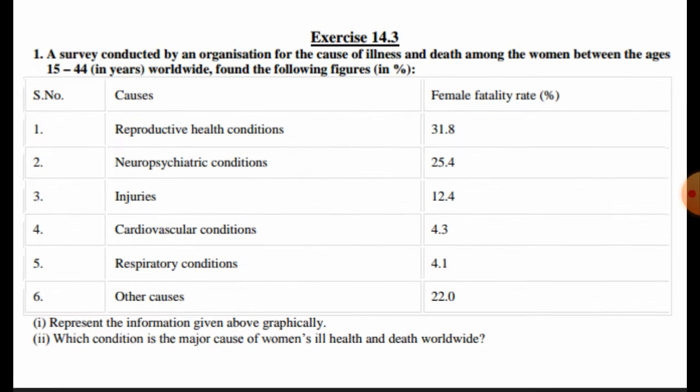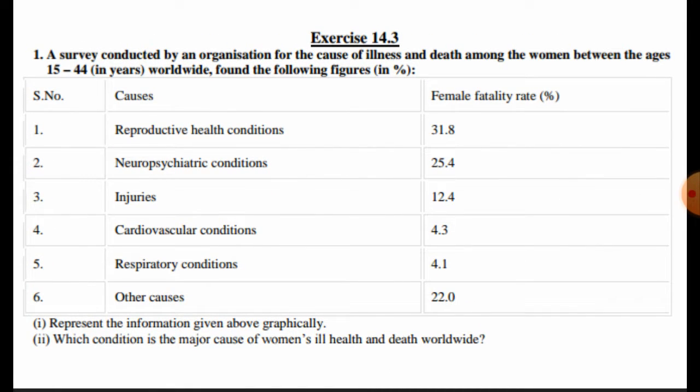In question number one, we have a survey conducted by an organization for the cause of illness and death among women between the age of 15 to 44 years worldwide. The figures given in percentage are: reproductive health condition 31.8, neuropsychiatric conditions 25.4, injuries 12.4, cardiovascular conditions 4.3, respiratory condition 4.1, and other causes 22.0.